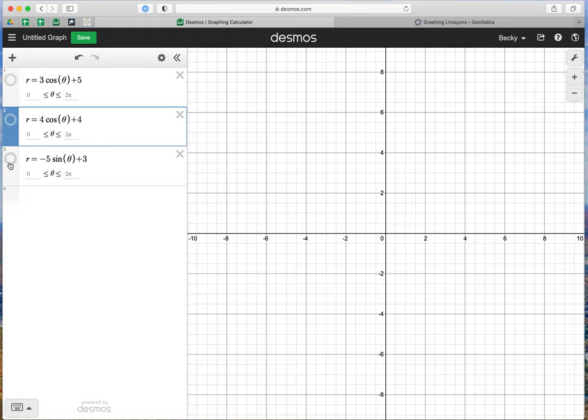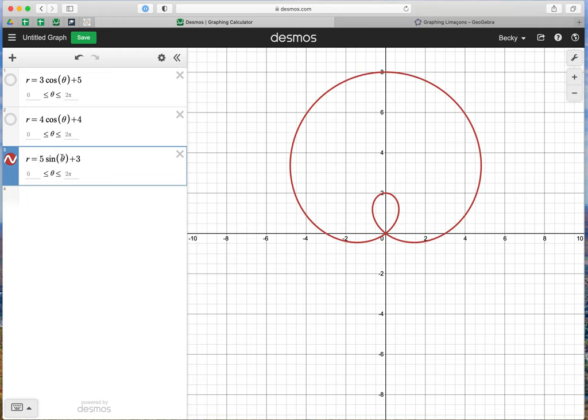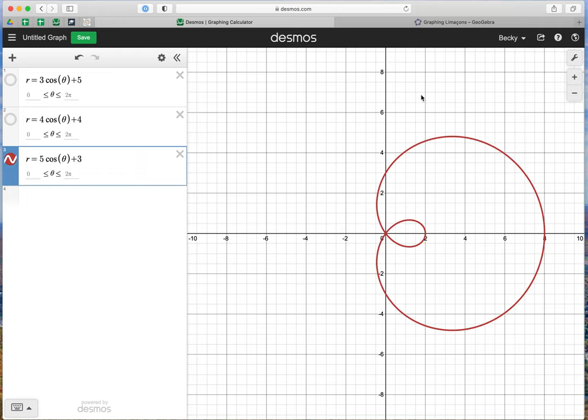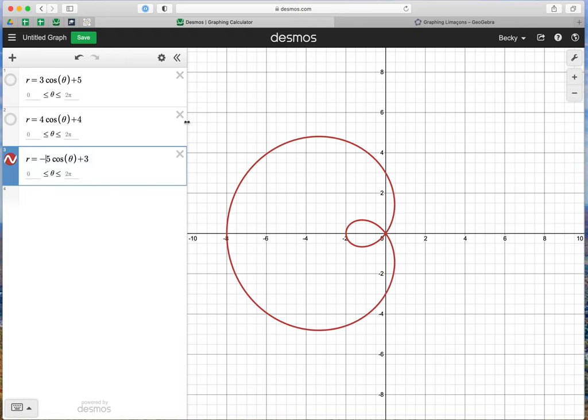Let's do the one with the inner loop for good measure. I'm going to change this to 5 cosine theta plus 3. So the majority of this is on the right side. If I make it negative 5, I would predict that it's going to flip over the line theta equals pi over 2, with the majority being on the left side. So let's do that. And there we have it.